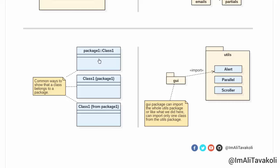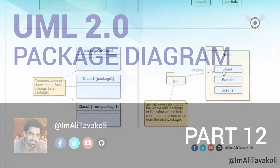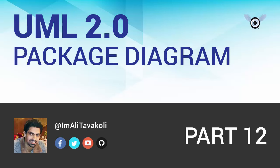In this example, I demonstrate how to show that a class belongs to a specific package in a class diagram — it can be shown in several ways. I also show how a package depends on a specific class in another package: for example, the GUI package imports the Alert class in the utils package. That's all there is to the package diagram — I hope you enjoyed it, please subscribe, and we'll see you in the next UML tutorial.